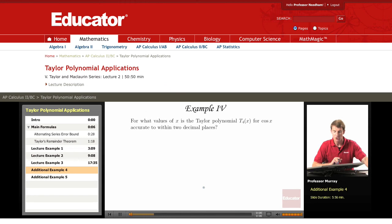So the first problem here is to look at the Taylor polynomial for cosine of x and we're cutting it off at degree 4, T4 of x, and we want to figure out if we want that to be accurate to two decimal places, what values of x can you plug in there?